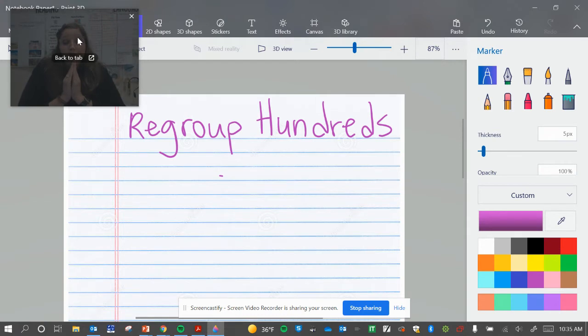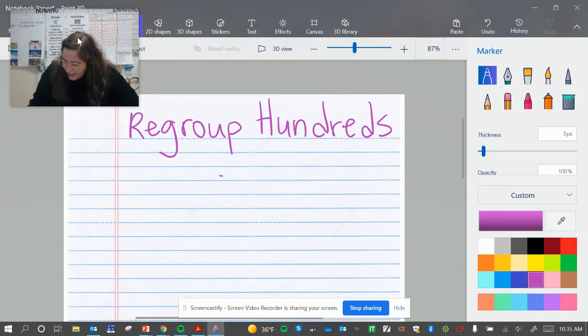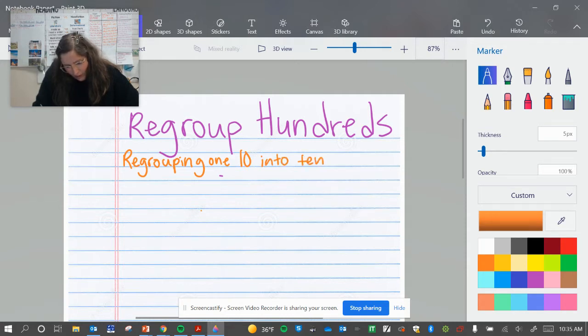So what we've talked about so far is taking a 10 and changing it into 10 ones, right? So let's just draw that really quick. Let's write regrouping 1 ten into 10 ones. So what that looks like is I have a 10 and I'm changing it into 10 ones. So let's draw 1, 2, 3, 4,